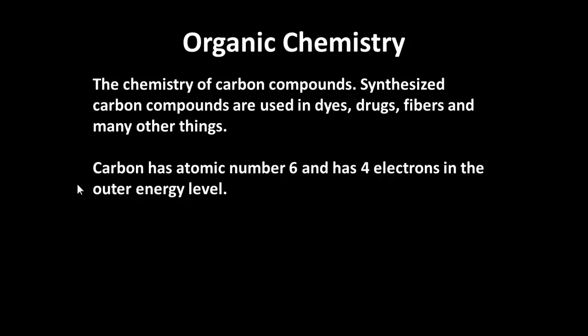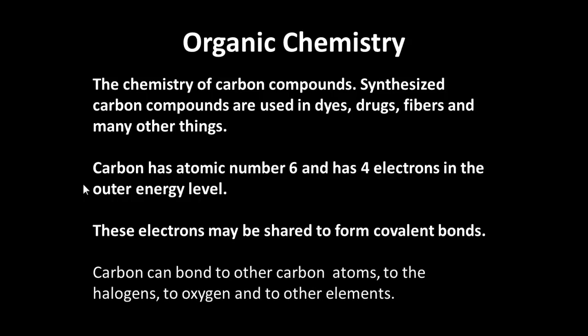So carbon has atomic number six. It has four electrons in the outer energy level and those electrons can be shared to form covalent bonds. Carbon can bond to other carbon atoms to form chains or circles. It can bond to the halogens, to oxygen and to various other elements and this is why it's so important in the chemistry of life.